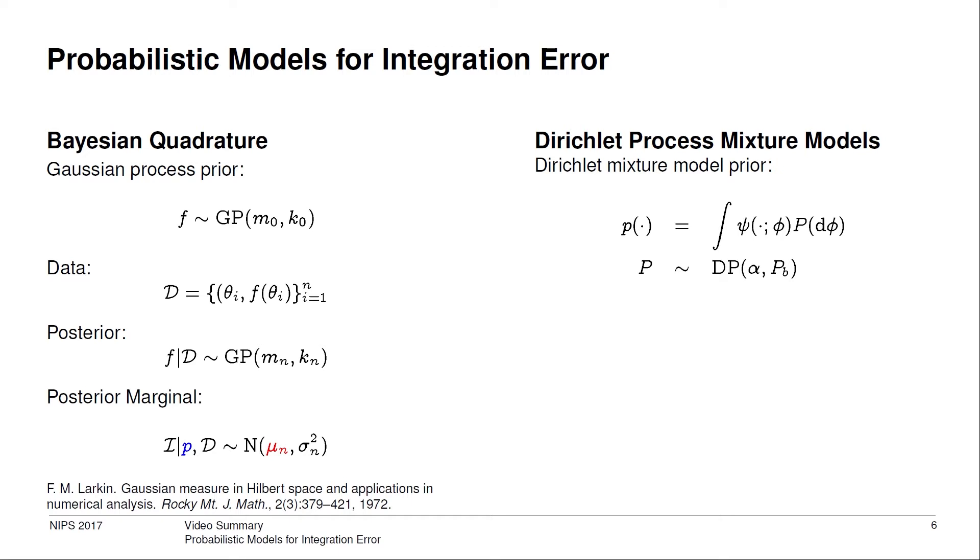There are lots of ways to do this, but Dirichlet process mixture models turn out to be natural. Here p is modeled as an infinite mixture of side densities, and the unknown mixing distribution, capital P, is assigned at Dirichlet process prior.